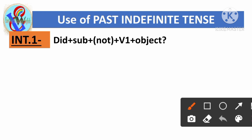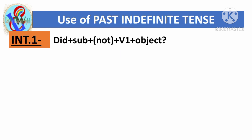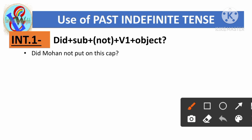Now let's look at the interrogative type 1 sentence structure. The structure is: Did + Subject + (not) + first form of verb + object. First sentence: 'Did Mohan not put on this cap?' Here 'did' is used first, then the subject 'Mohan', then 'not' because it's also negative, then the first form of the verb 'put on', and 'this cap' is the object.